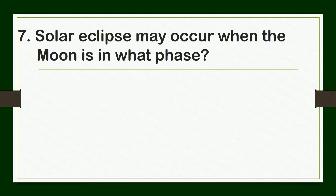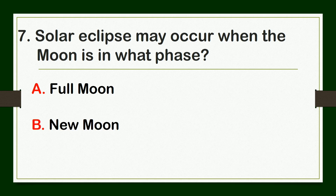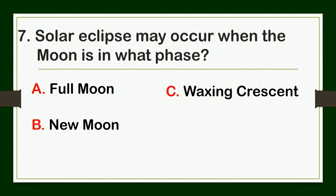A solar eclipse may occur when the moon is in what phase? A. Full moon, B. new moon, C. waxing crescent, or D. waning crescent.